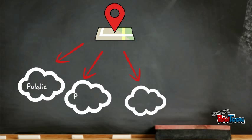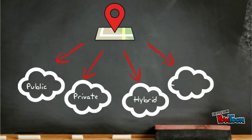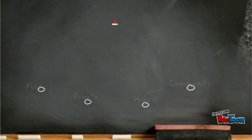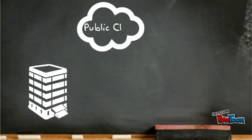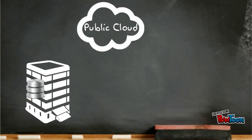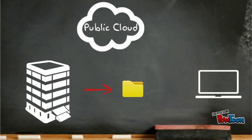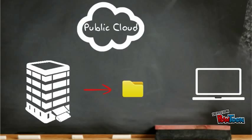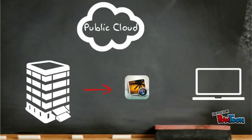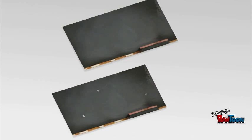Public, private, hybrid, and community clouds. Public cloud means that the whole computing infrastructure is located on the premises of a cloud computing company that offers the cloud service. The location remains separate from the customer and the customer has no physical control over the infrastructure.